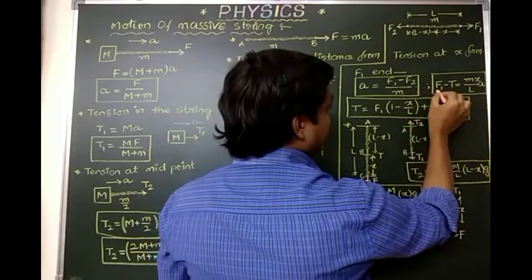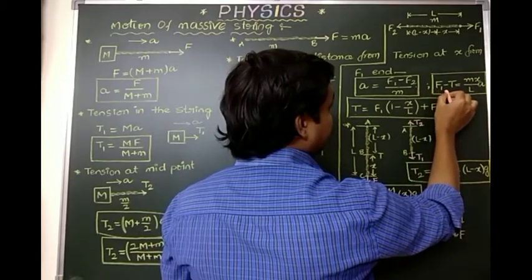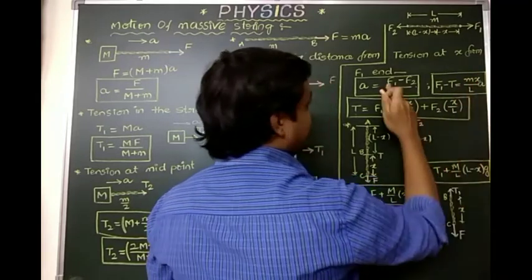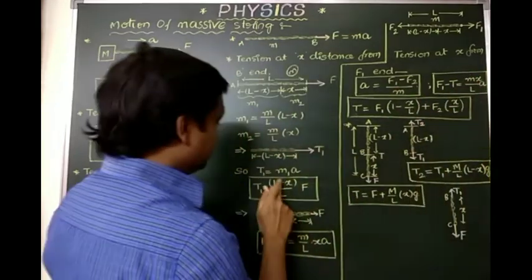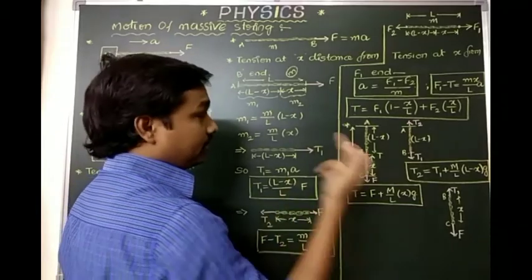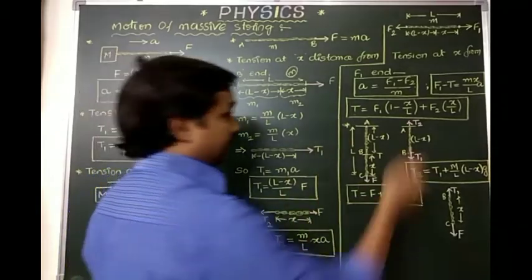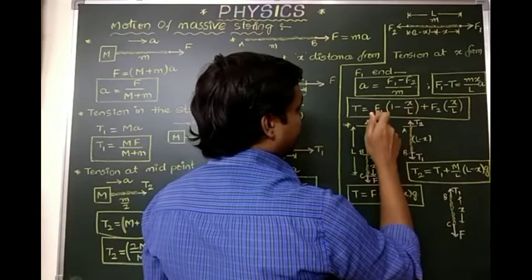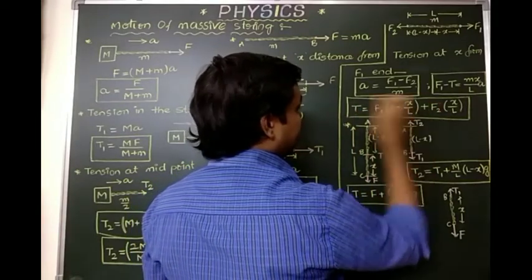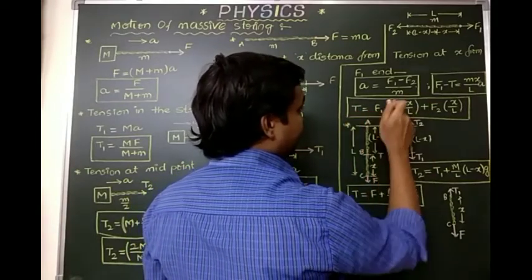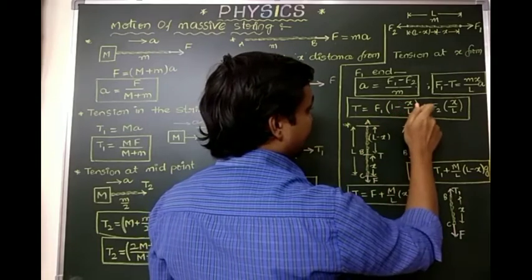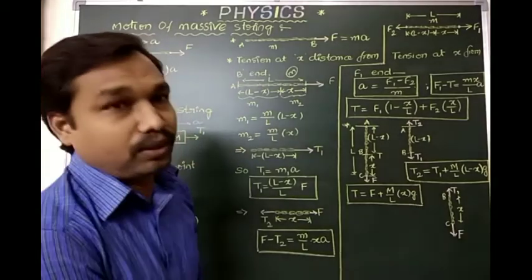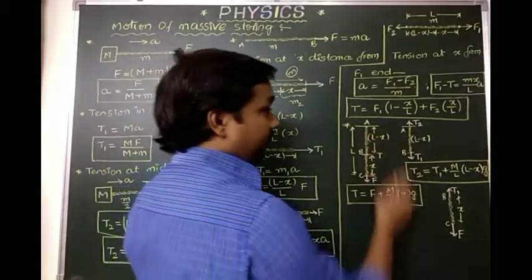Combining the equations from both sides and substituting, the tension T at distance x from the F1 end is T equals F1 times (1 minus x/l) plus F2 times (x/l). This is the general formula for tension at any point in a string pulled by two different forces.